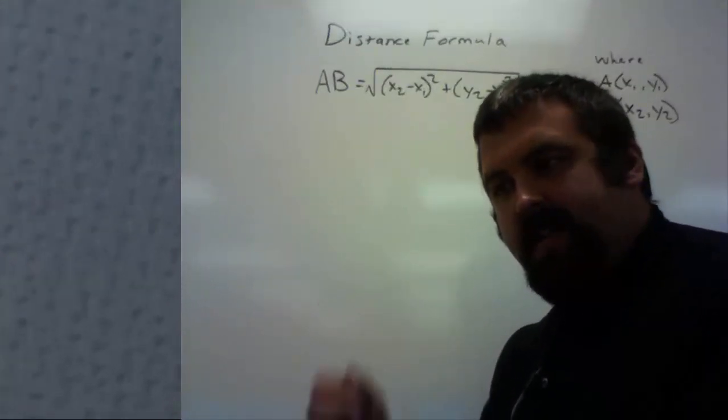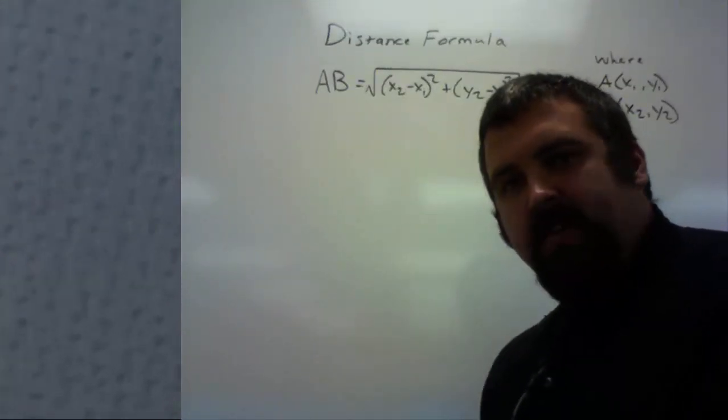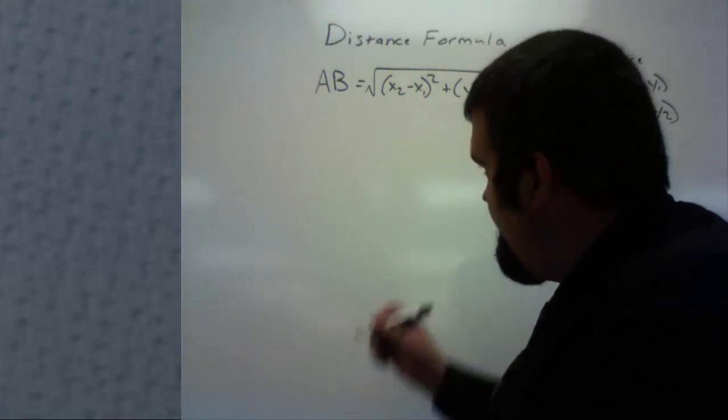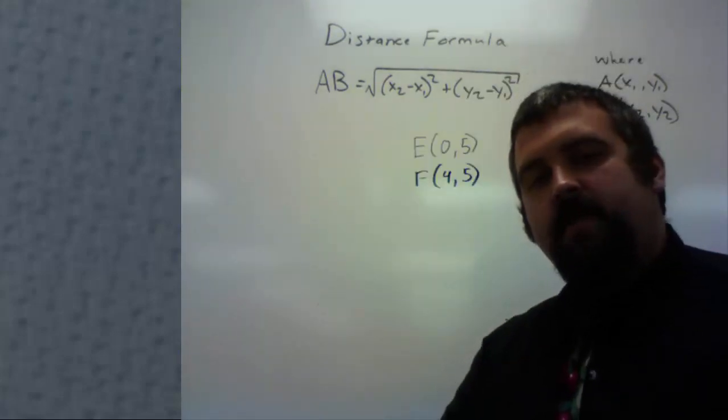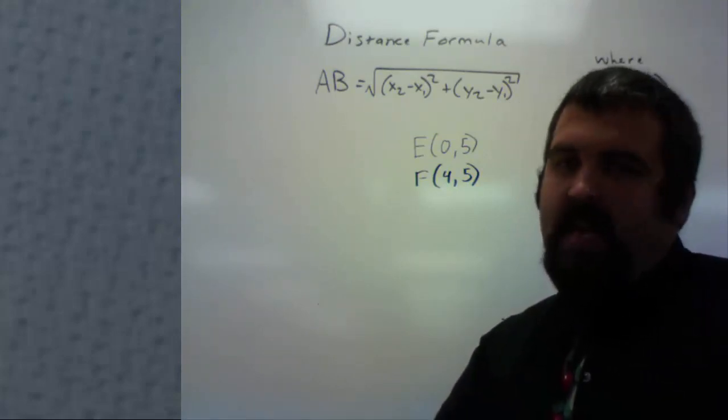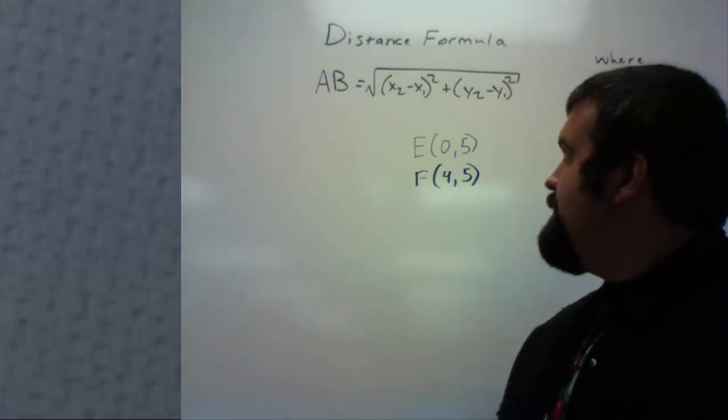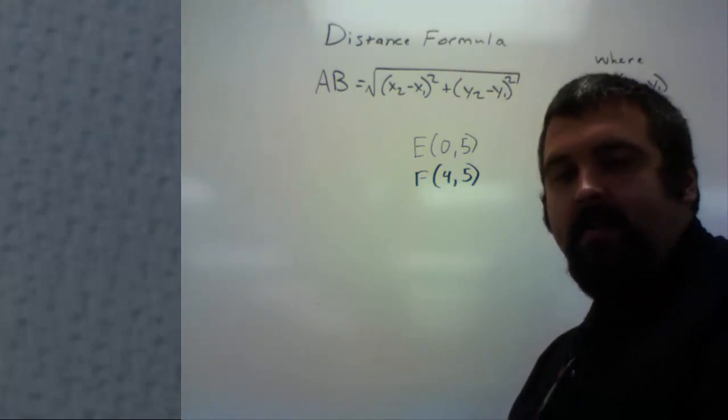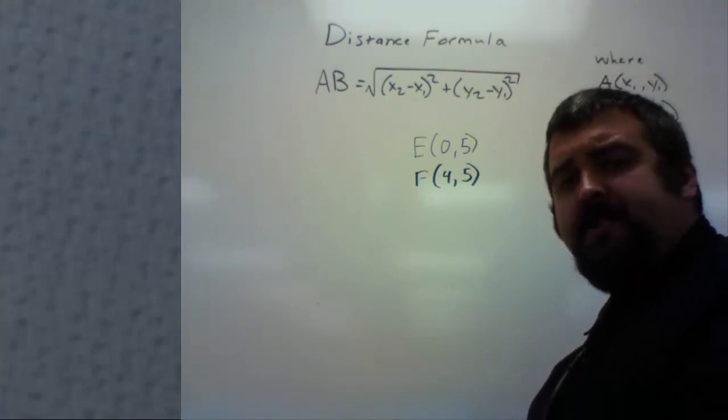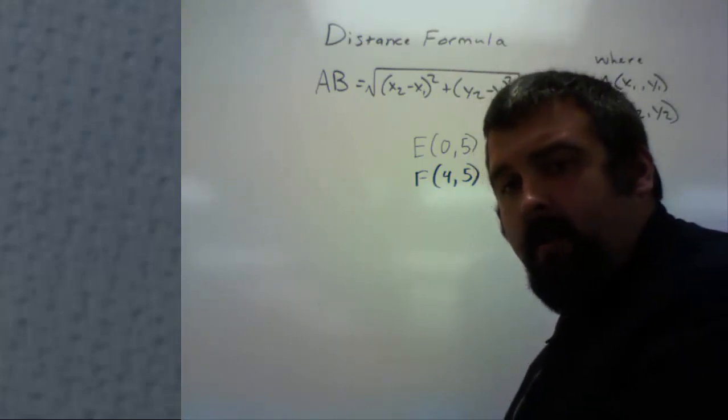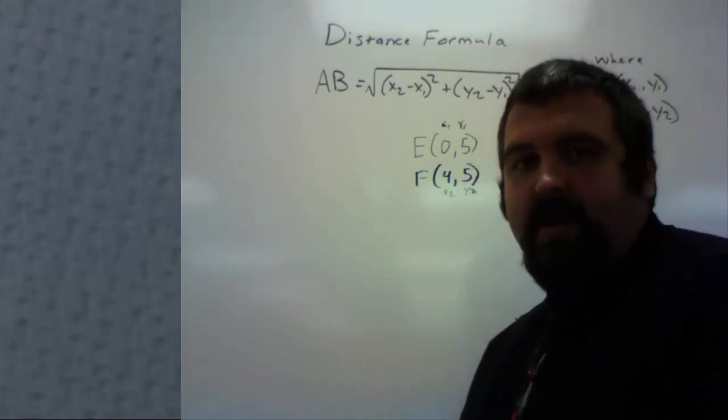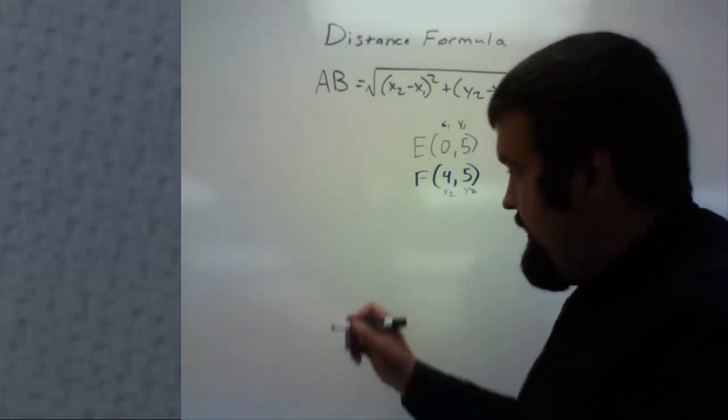Let's try this for a trivial case. For instance, let's just stay along the number line. We're going to use the points E and F. Just to be consistent here, we're going to use a horizontal line. Something that has the same Y coordinate. I chose E being 0, comma 5 and F being 4, comma 5. I'm just going to choose E to be X1, Y1 and F to be X2, Y2. I wrote it in there just so that way I won't forget.